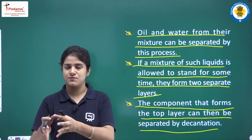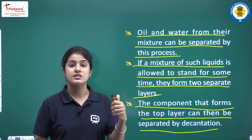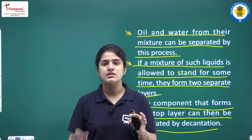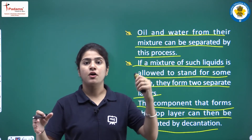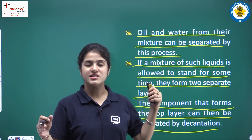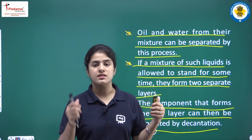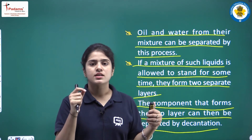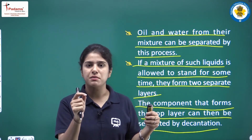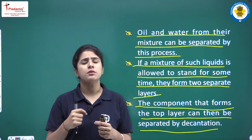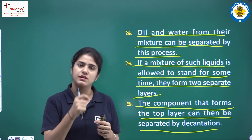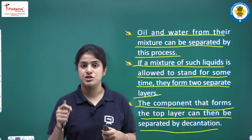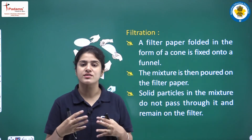The next process is related to this concept. We have discussed separating water from sand by decantation, but the water obtained is not completely clear — there will be a very small amount of sand particles still present in it. By what method can you separate those sand particles from water? You will use the filtration process. The next process is filtration.